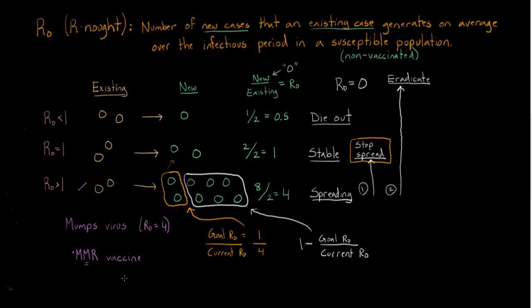So what proportion, then, what proportion need vaccination? What proportion of our community needs vaccine to at least stop the spread? That's the goal that we said we had. What proportion needs vaccine? Well, we'd say, it's just what we laid out. It would be 1 minus the goal R0, which is 1, divided by the current R0, which is 4.